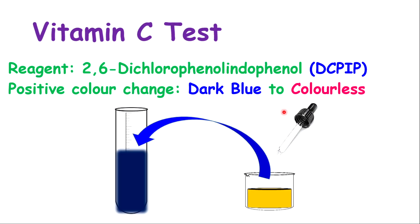Our final test is the vitamin C test, done with a very unique reagent abbreviated as DCPIP. Its full name is 2,6-dichlorophenyl-indophenol. It is dark blue in color — darker than Benedict's solution or the Biuret solution. To test any food or substance for vitamin C, you pour the DCPIP into a test tube and then add drop by drop of that juice or substance into the test tube containing the DCPIP.